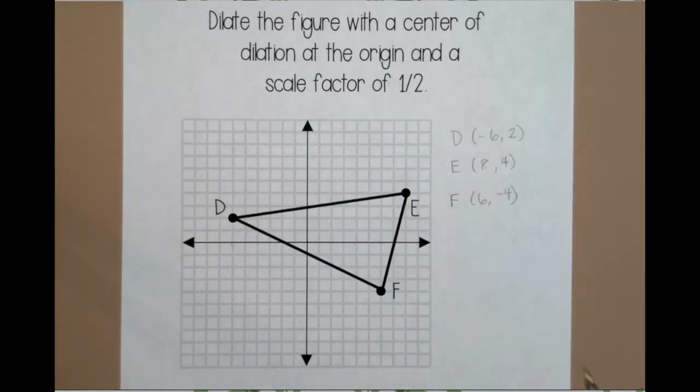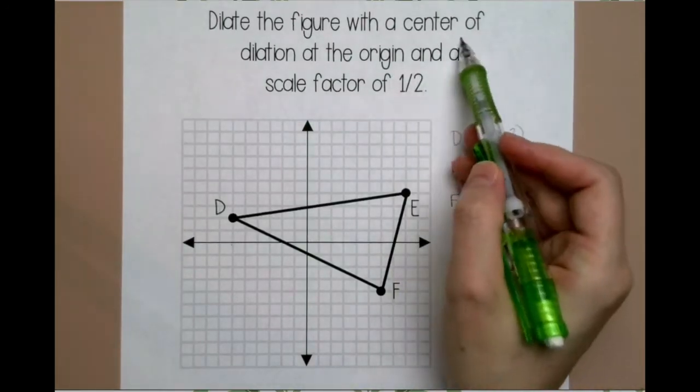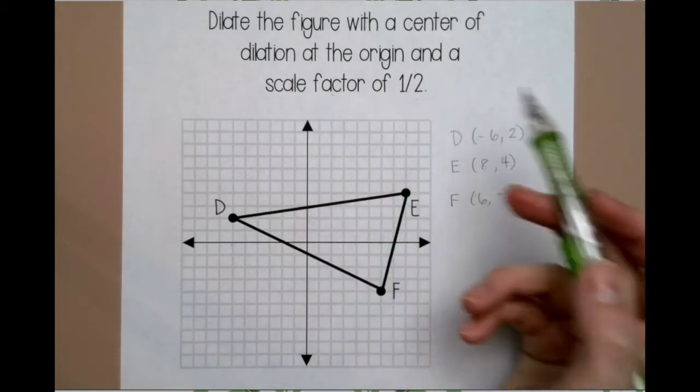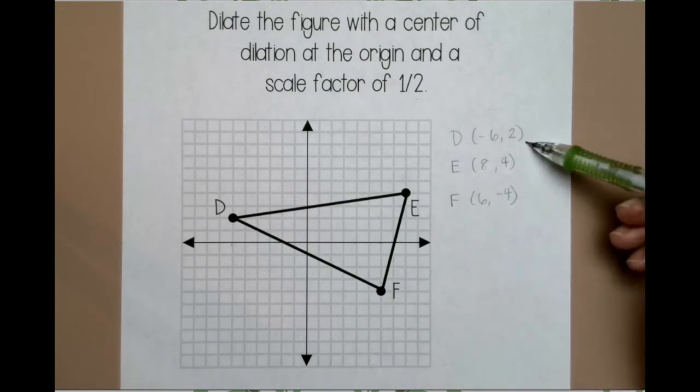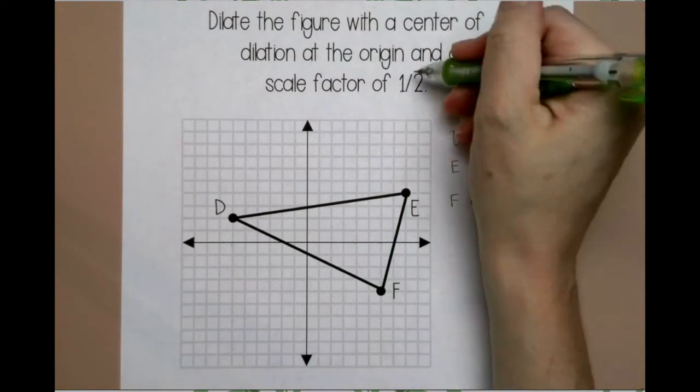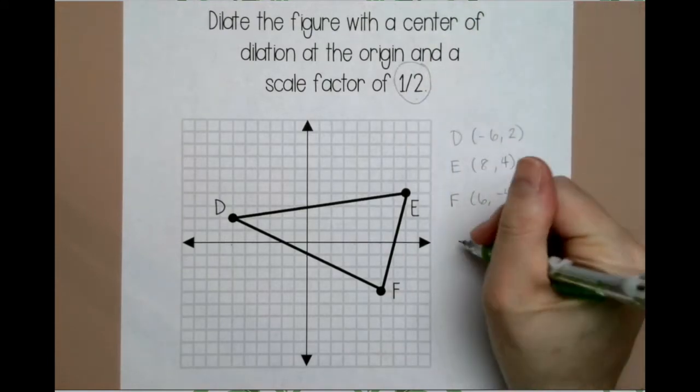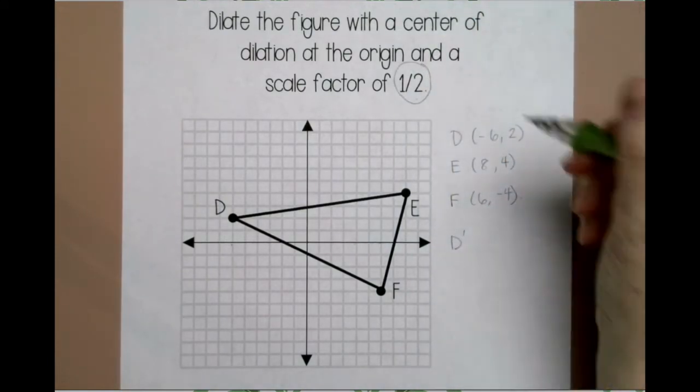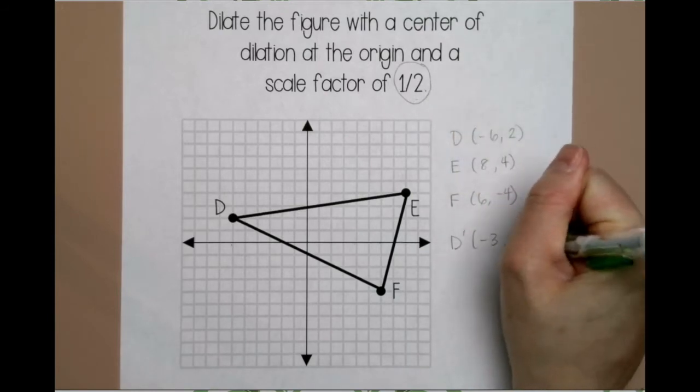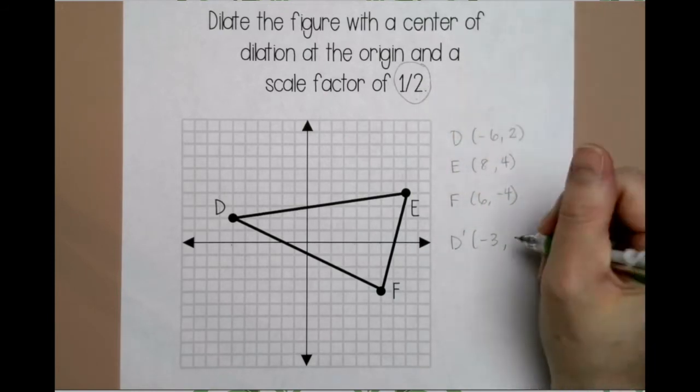In my next example, I want to dilate this triangle with a center of dilation at the origin and a scale factor of 1/2. So, I'm going to start the same way. I listed out my coordinates for the triangle, and then I'm going to multiply all of my coordinates by my scale factor, which is 1/2. So for D prime, I'm going to multiply -6 times 1/2, which is -3, and then 2 times 1/2, which is 1.